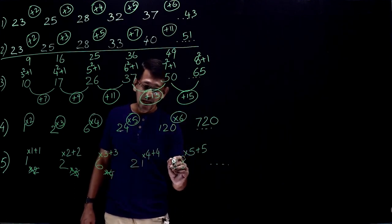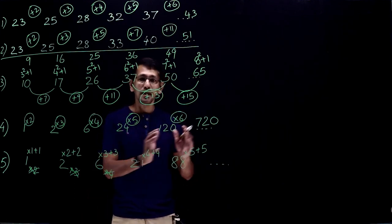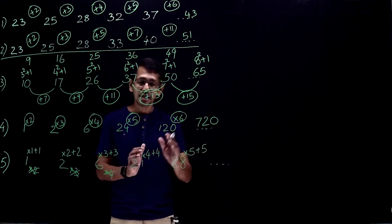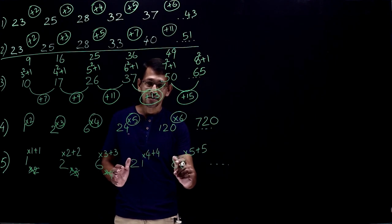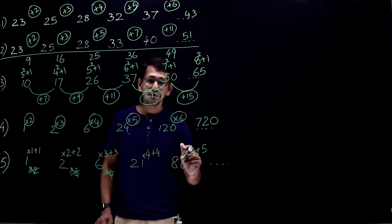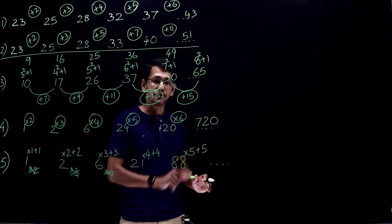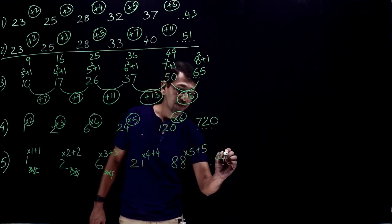I'll repeat it. 88, you think about 80 plus 8. 80 into 5, 400. The balance is 8, 8 into 5 is 40. So 440 plus you have this 5. So the answer is 445.